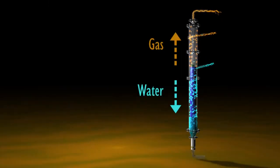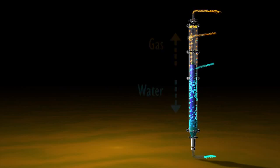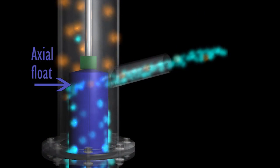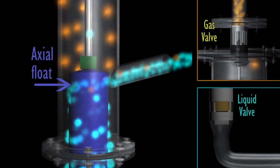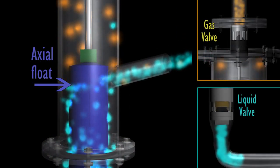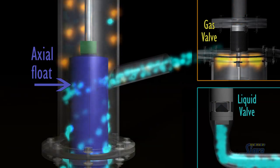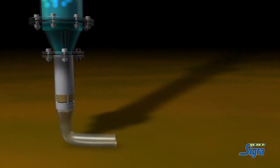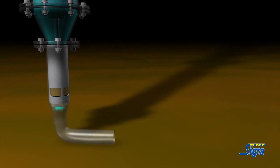The cyclonic action separates the streams into gas and water containing any fines. Within the separator is an axial float that controls a gas valve at the top and a liquid valve at the bottom of the separator. As the level of liquid increases inside the separator, it lifts the float and opens the liquid valve.